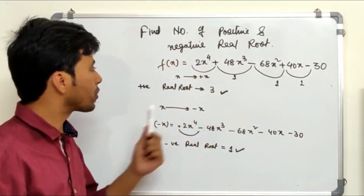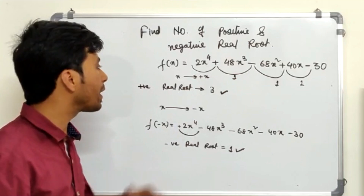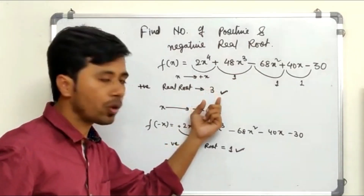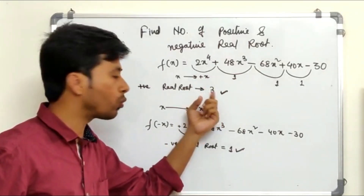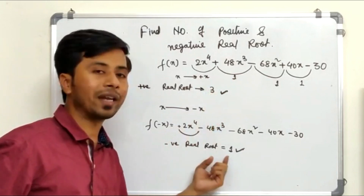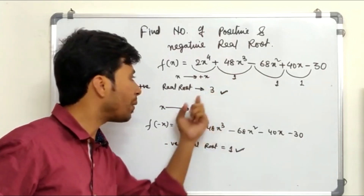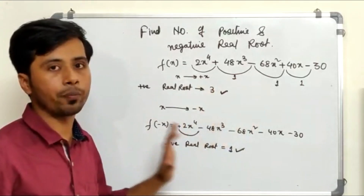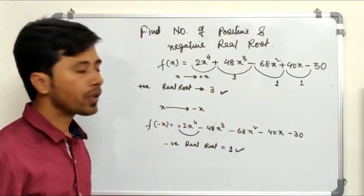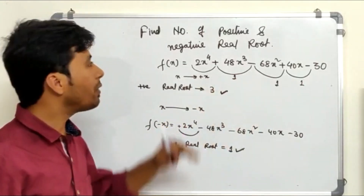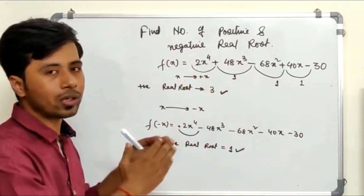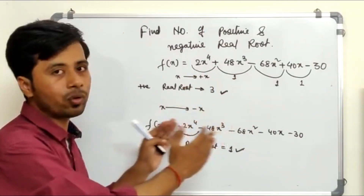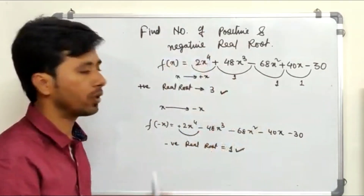This is how you find positive real roots and negative real roots. One more important thing: these are maximum numbers. The 3 positive real roots is the maximum possible, and 1 is the maximum number of negative real roots. They can be fewer — this rule does not tell you the exact number of positive or negative real roots.